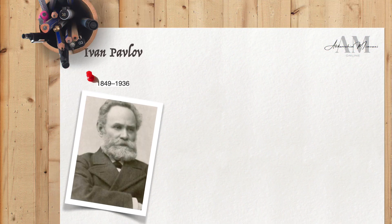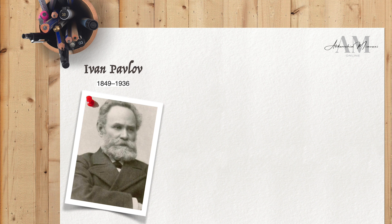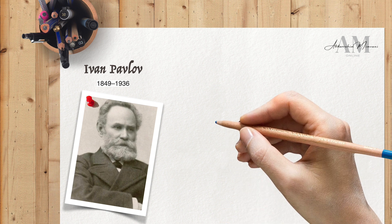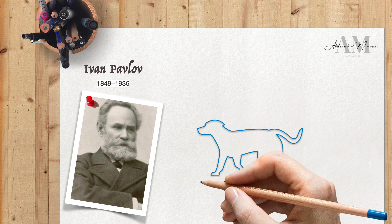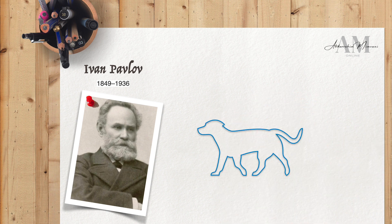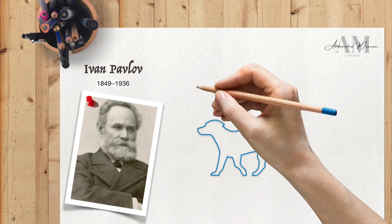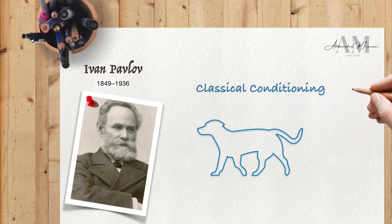In the late 1800s and early 1900s, Russian scientist Ivan Pavlov and his team were conducting research on the digestive process in dogs when they noticed changes in the timing and rate of salivation of these animals. Pavlov later developed a theory based on this observation that is well known as classical conditioning.